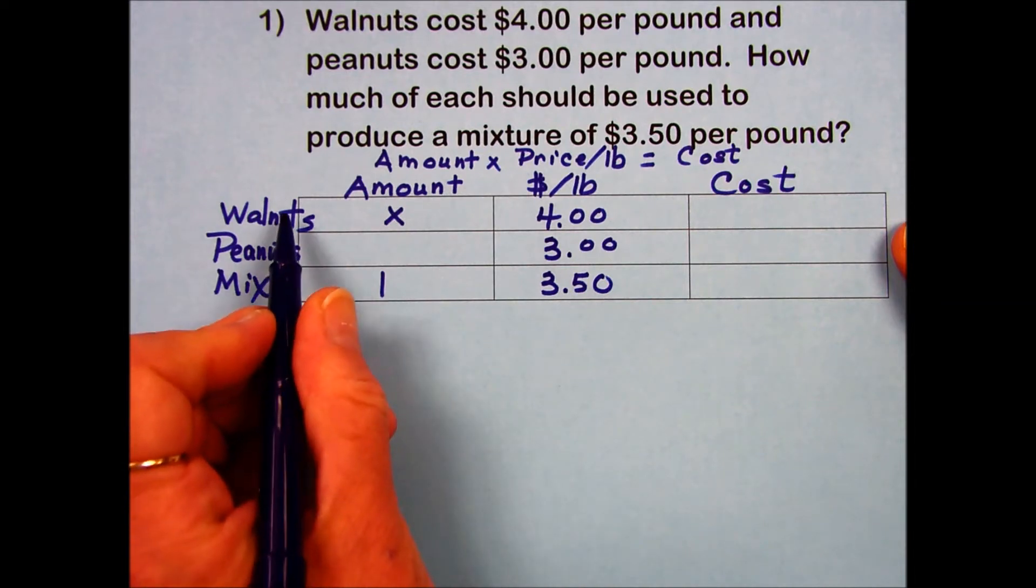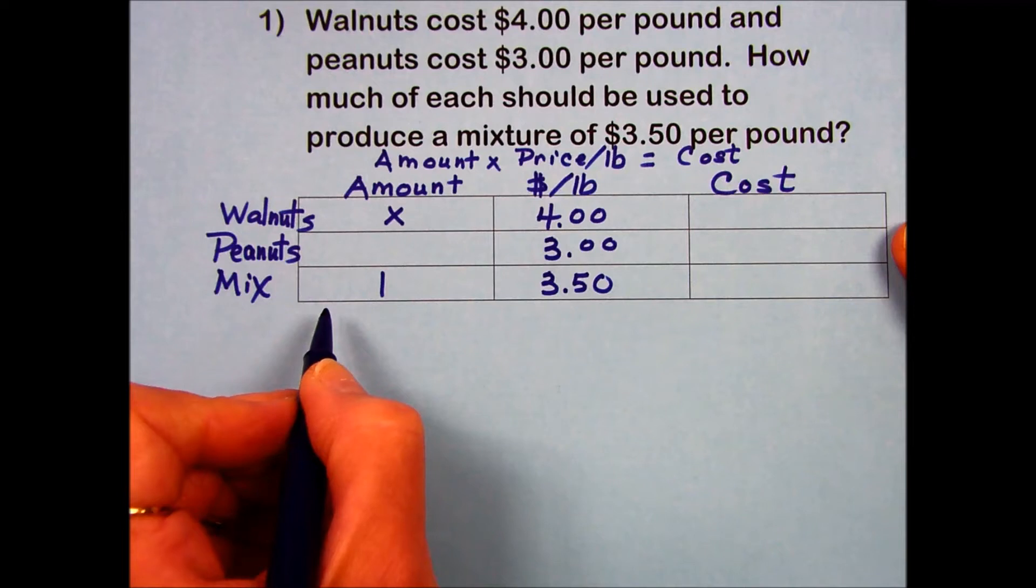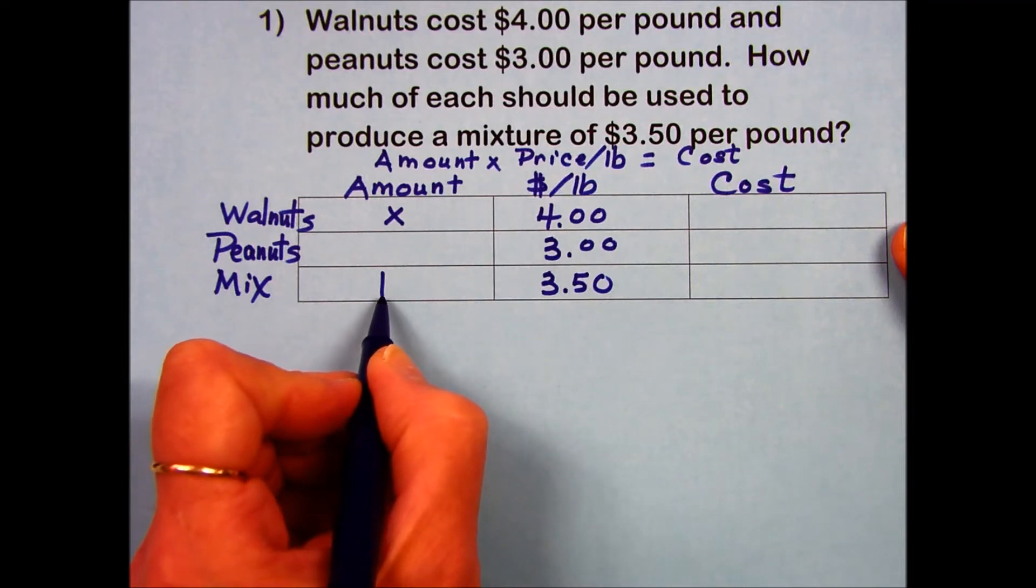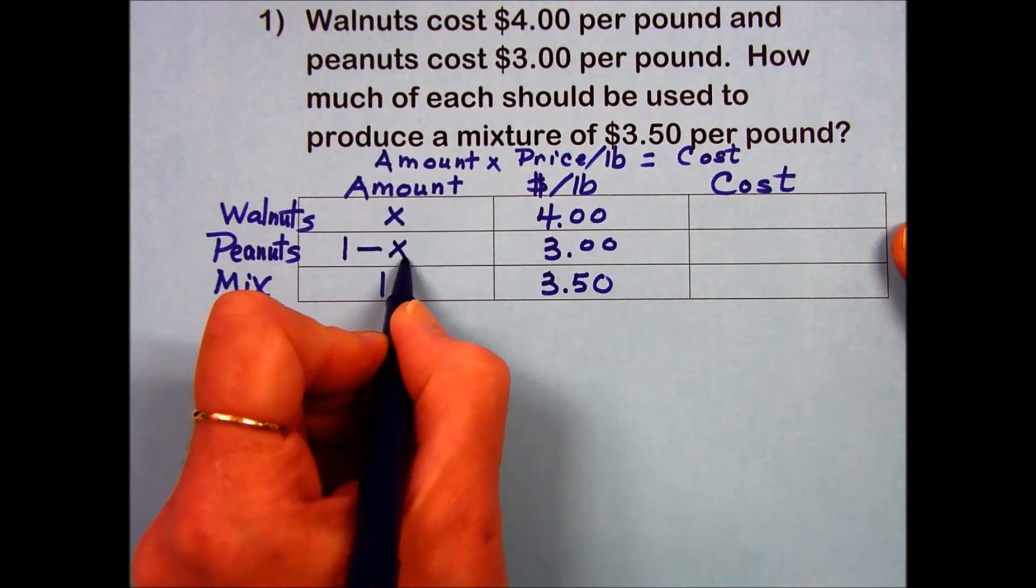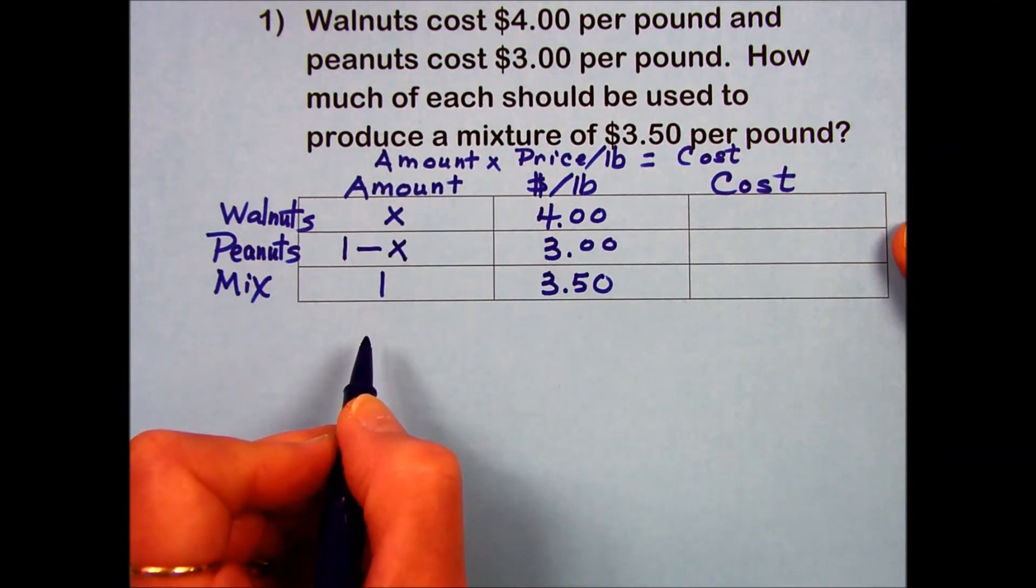Since walnuts and peanuts combine to give us that total amount, I'm going to take the total one pound and subtract the walnut amount, which should represent the amount of peanuts that are in this mix.